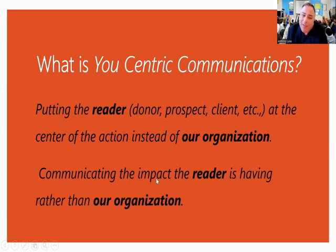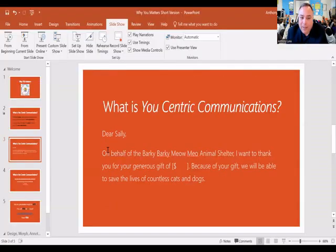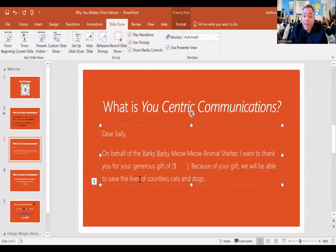What does this look like practically speaking on paper? Let's take it from a thank you letter perspective. I've created a draft mock-up of a letter — typical of something we've all written before. 'Dear Sally, on behalf of the Barky Barky Meow Meow Animal Shelter, I want to thank you for your generous gift of [amount]. Because of your gift, we will be able to save the lives of countless cats and dogs.' At first glance, this probably looks pretty normal — a typical thank you letter opening with 'on behalf of.'